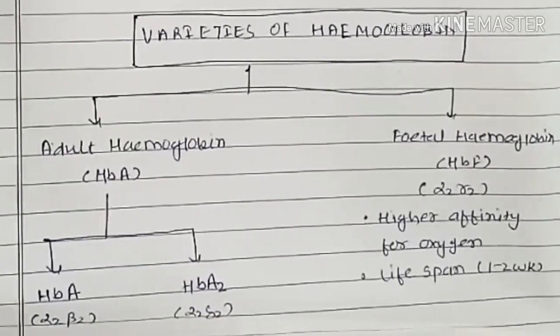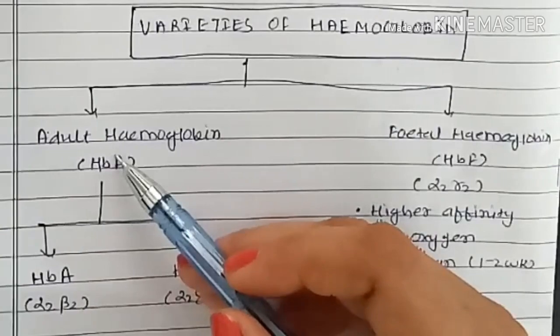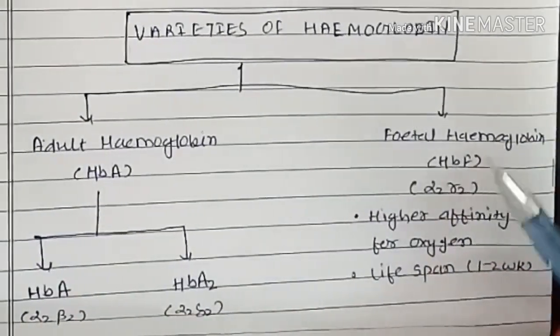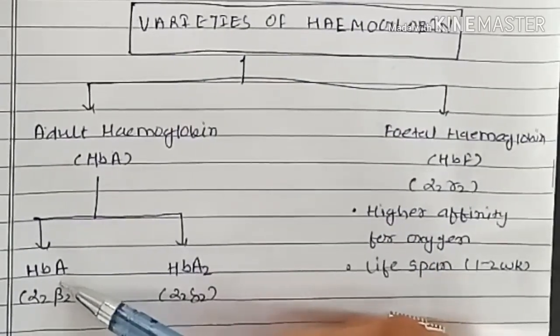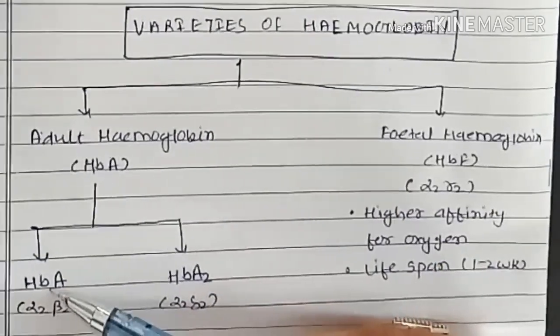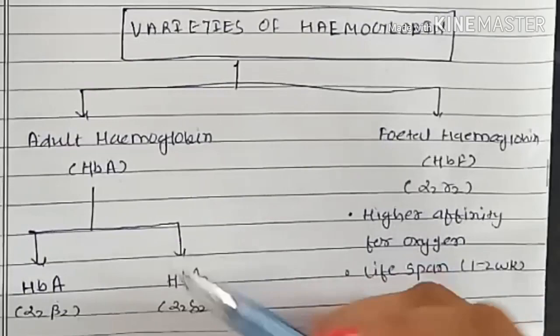Different varieties of hemoglobin which are normally found are adult hemoglobin HbA and fetal hemoglobin HbF. Adult hemoglobin has sub-varieties HbA and HbA2. In HbA, polypeptide chain is alpha-2-beta-2, and in HbA2, polypeptide chain is alpha-2-delta-2.